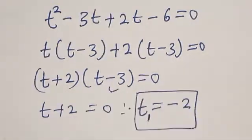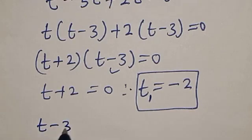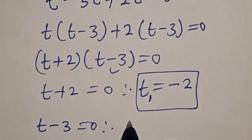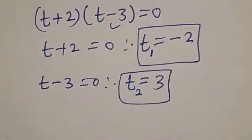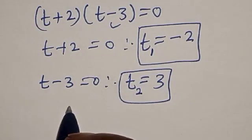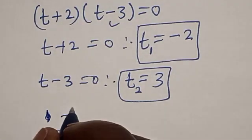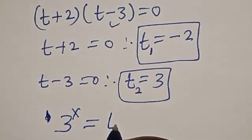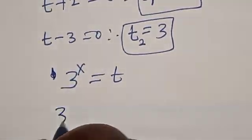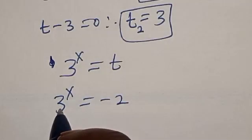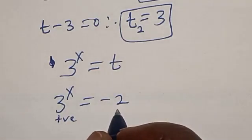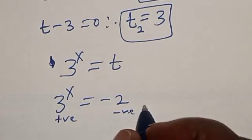Also, from t minus 3 equals 0, therefore T equals 3. That is T₂. But remember that t equals 3 raised to power x. So 3 raised to power x equals minus 2 must be rejected, because an exponential expression is always positive and cannot equal a negative number. We will reject this.